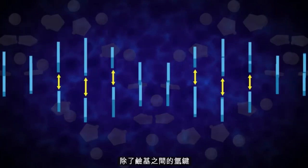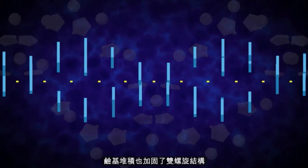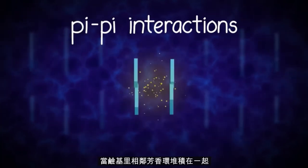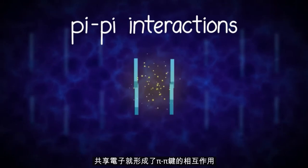In addition to the hydrogen bonding between the bases, the stacking of the bases also stabilizes the double helix structure. These pi-pi interactions form when the aromatic rings of the bases stack next to each other and share electron probabilities.